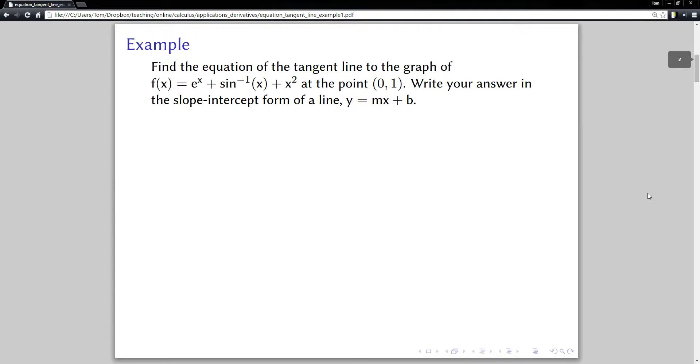Alright, so the example is find the equation of the tangent line to the graph of f(x) = e^x + sin^(-1)(x) + x^2 at the point (0, 1). Write your answer in the slope-intercept form of a line, y = mx + b.